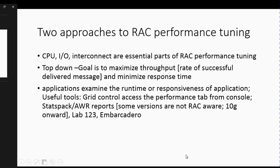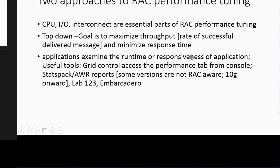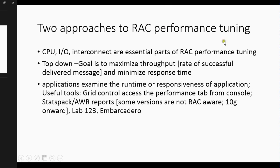In terms of RAC performance tuning, there are two approaches you can take. One is the top-down approach, and the second is the bottom-up approach. From the top down, your goal is to maximize throughput and minimize response time — specifically the application response time.